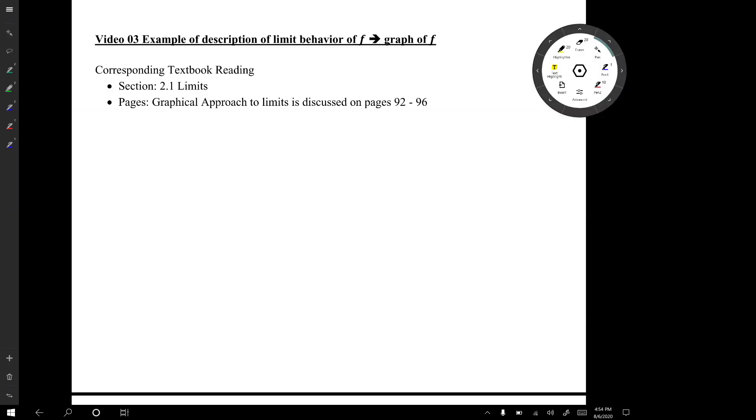The subject for today will be an example involving going from a description of the limit behavior for a function f to a graph of f. So we're still dealing with the graphical approach to limits. That's from section 2.1 of the book and it's discussed on pages 92 to 96 of the book.